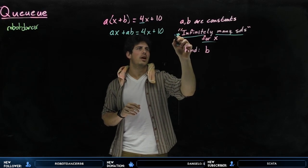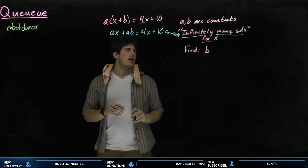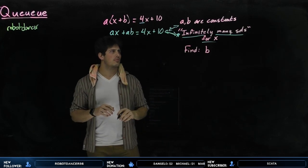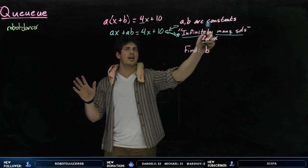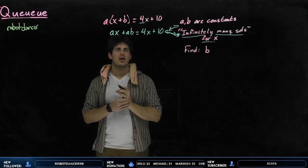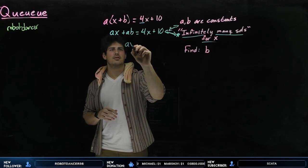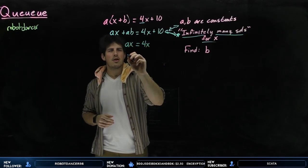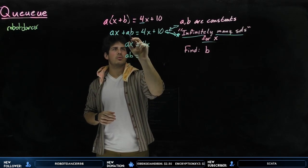Now that's where this comes into play. If this is true for infinitely many solutions for x, and a and b are constants, this allows me to say that ax equals 4x. This means we have symmetry here. ab is going to be equal to 10.